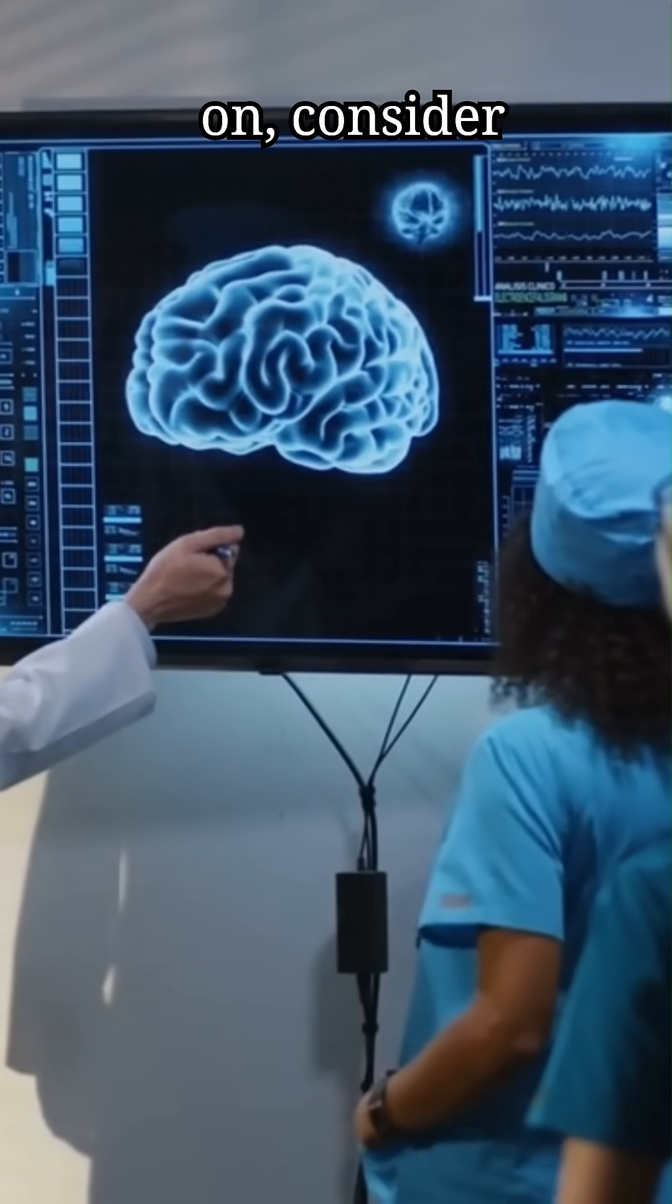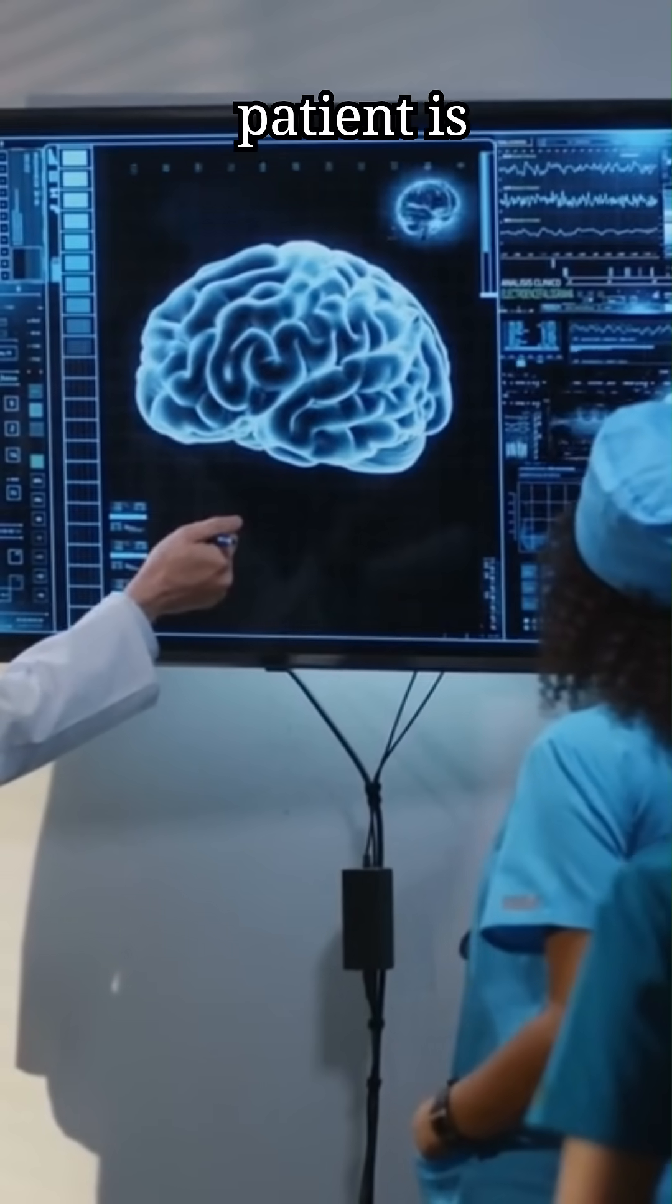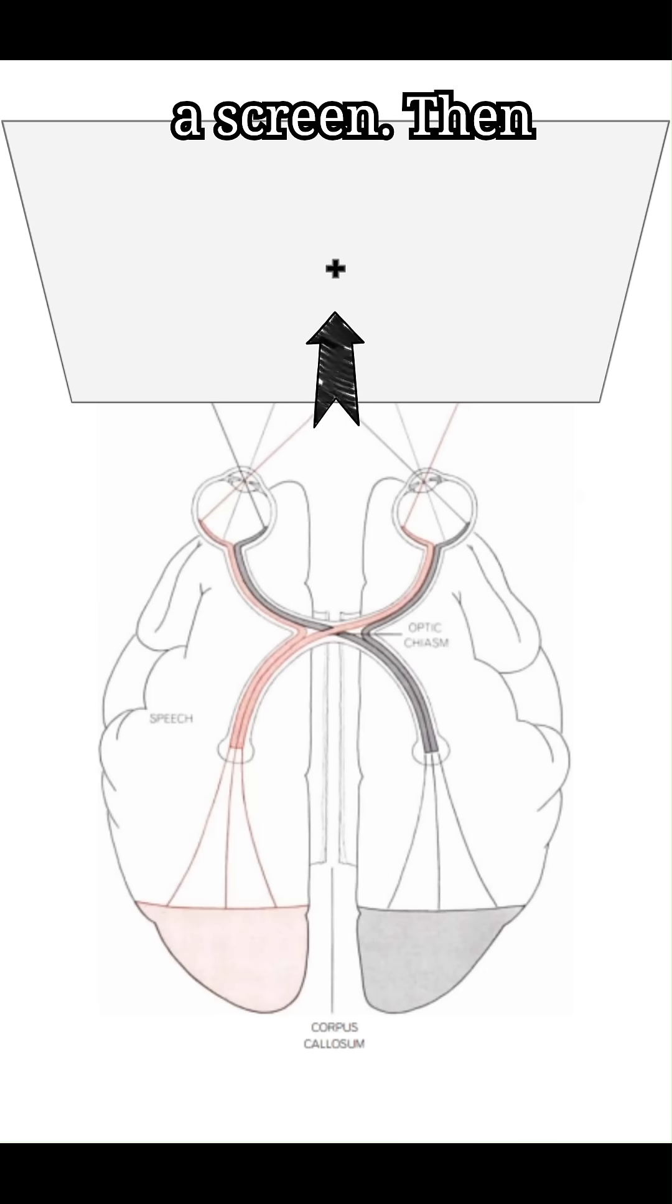To understand what is going on, consider this experiment. A patient is asked to stare at a cross in the middle of a screen. Then two simple shapes are flashed, one on the left side and one on the right side of the screen.